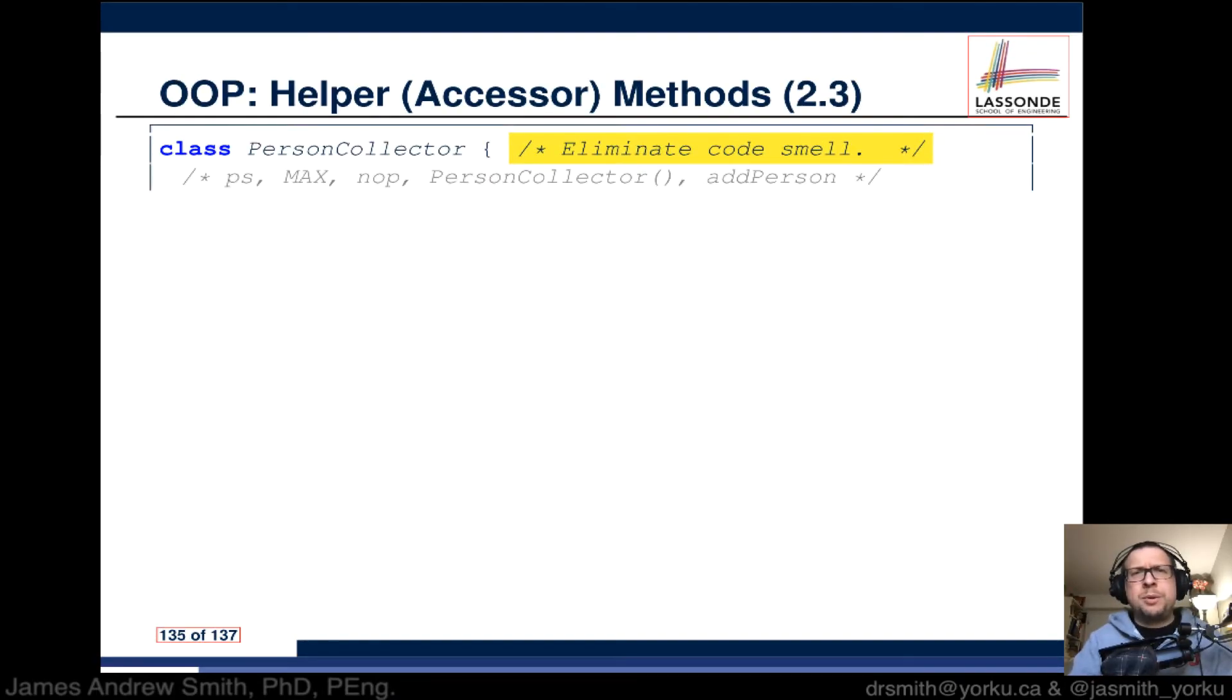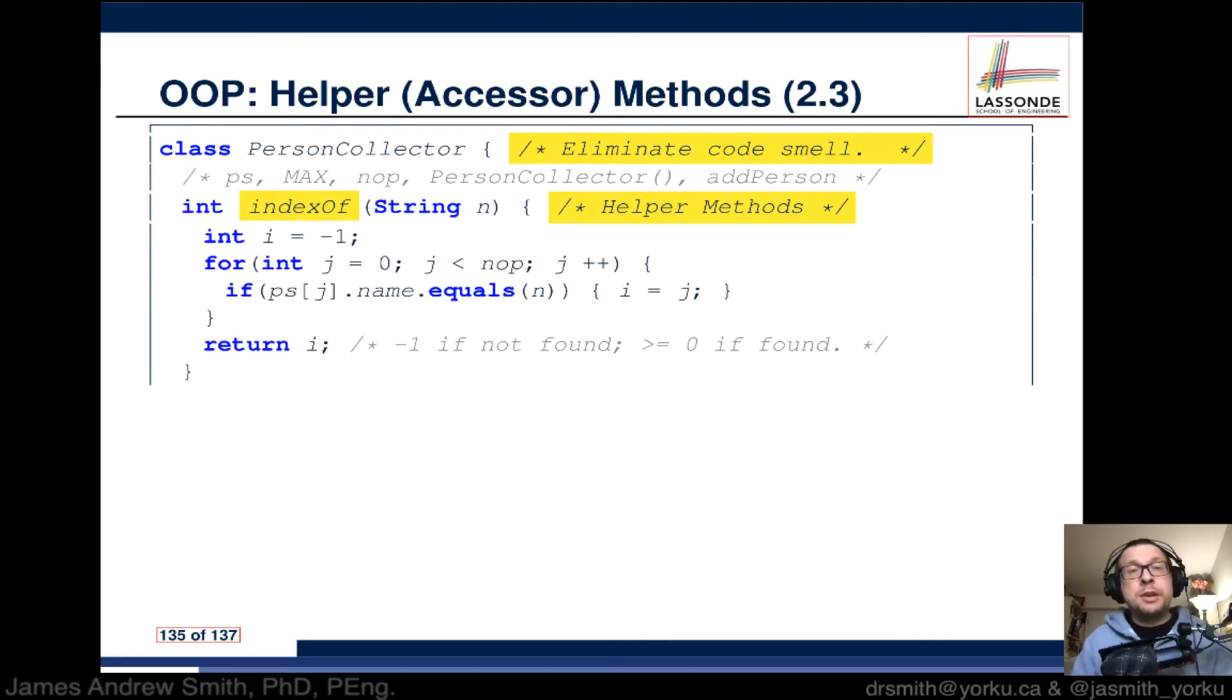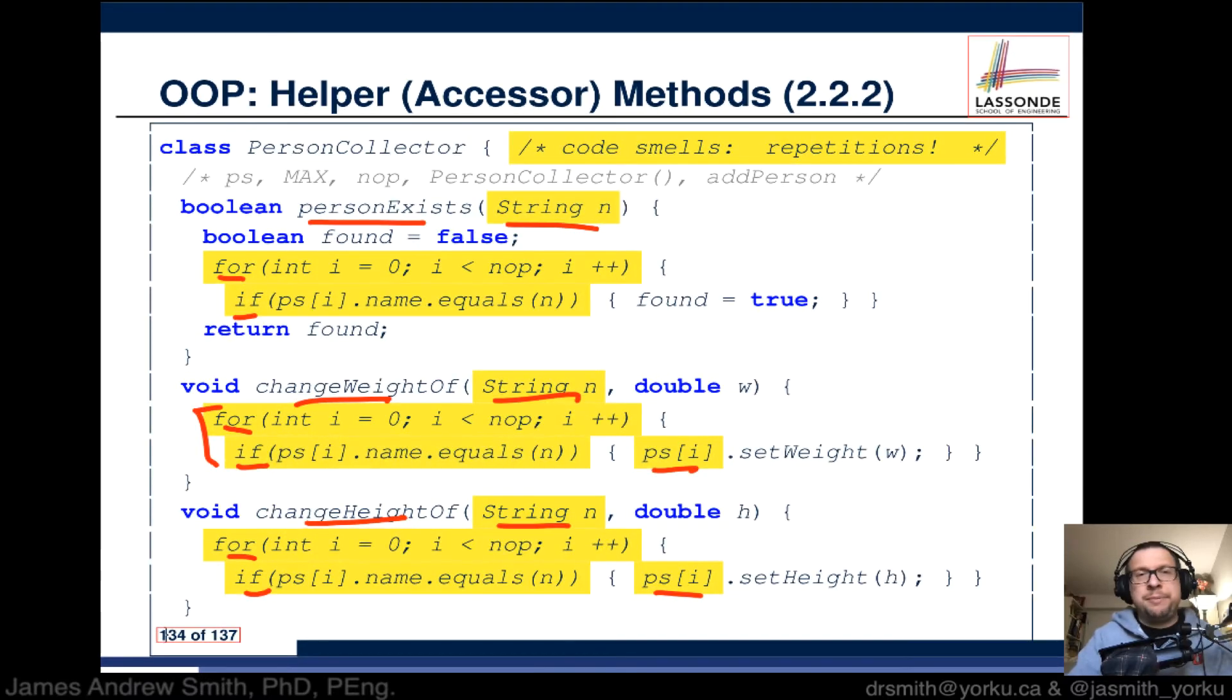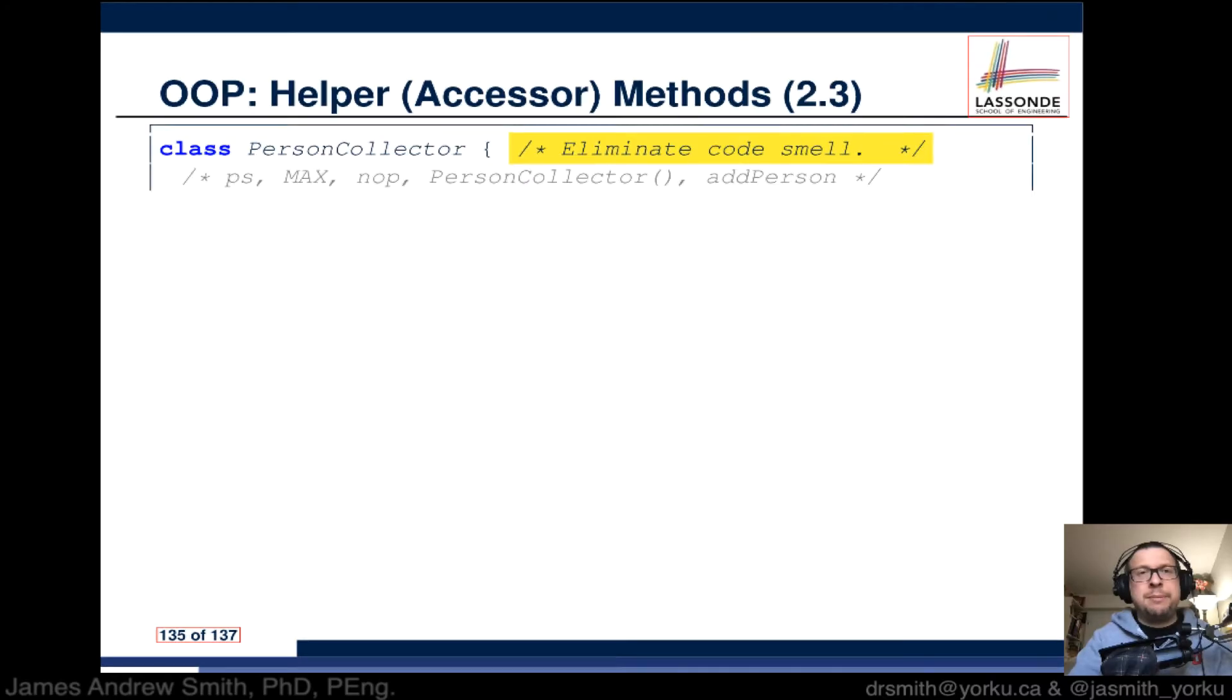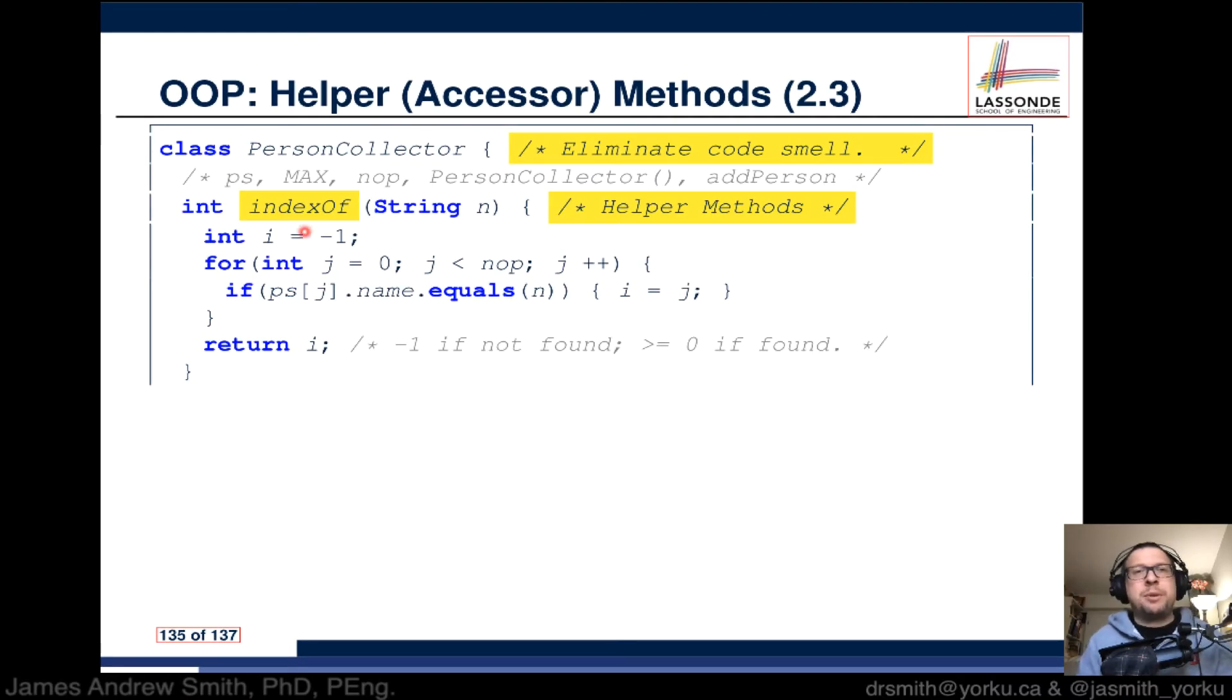What we want to do is eliminate this repetition. What we'd like to do is have a new method called indexOf which basically does what we saw earlier. This repeating bit of code basically has to do with the indices. We want indexOf and we're going to get the index of based on the string that we're passing in.